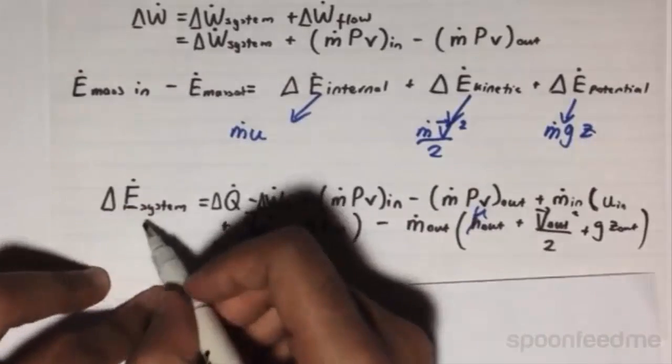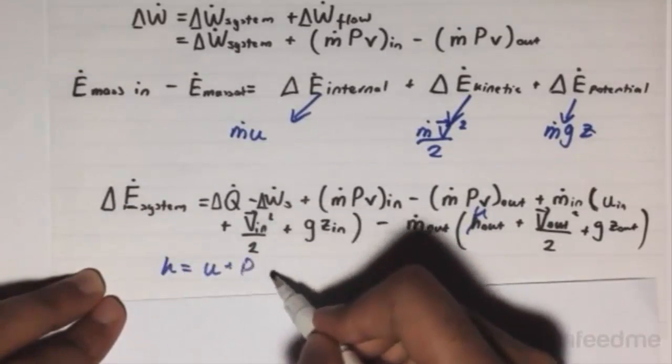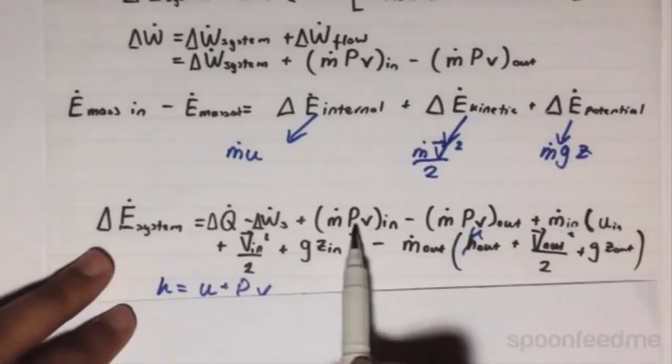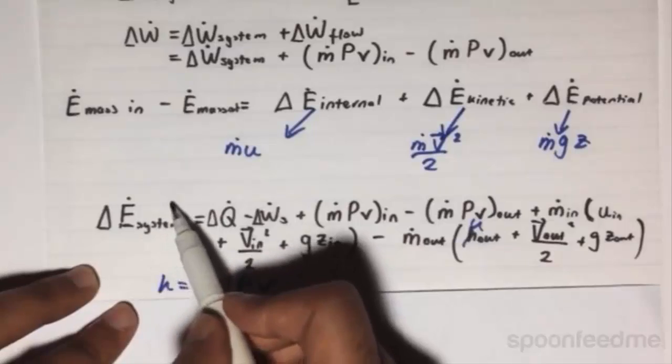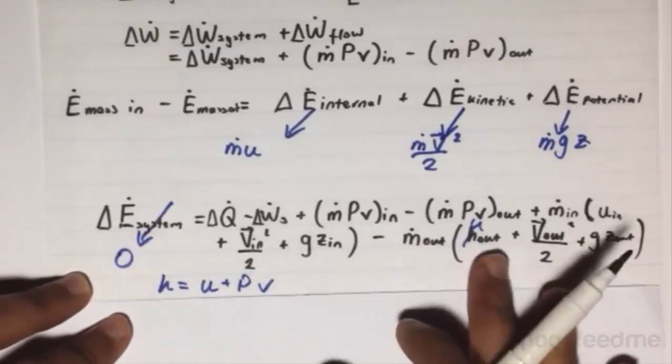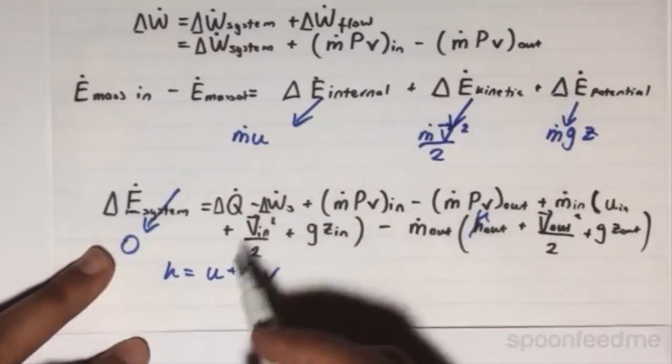If we recall, h equals u plus pv. We have pv here, and we have u here. And also, this, as we already found before, is going to equal 0. So we get this final equation.